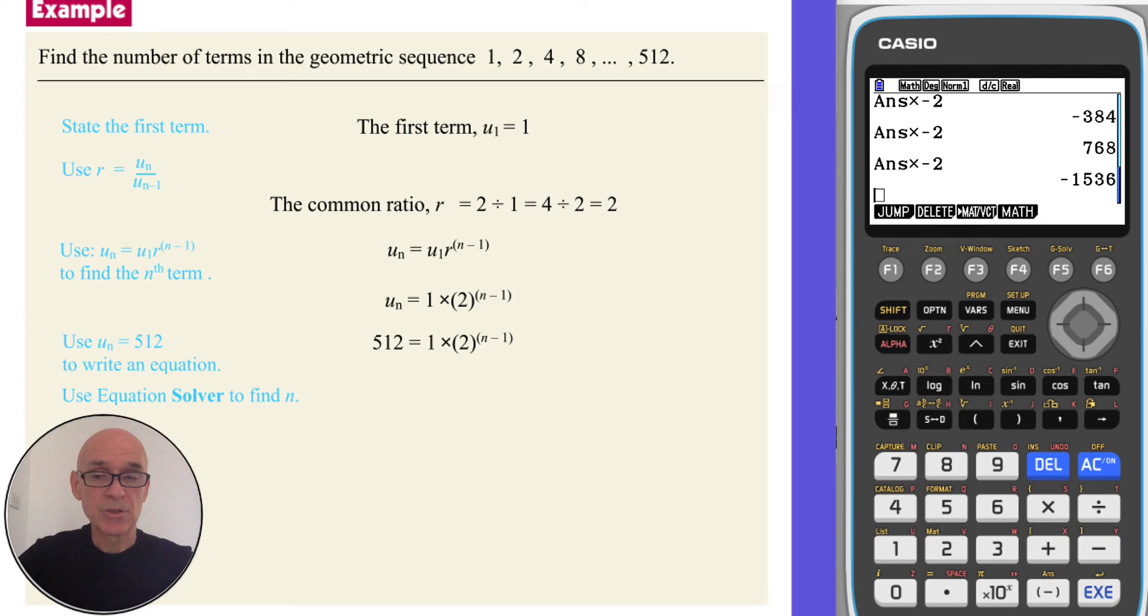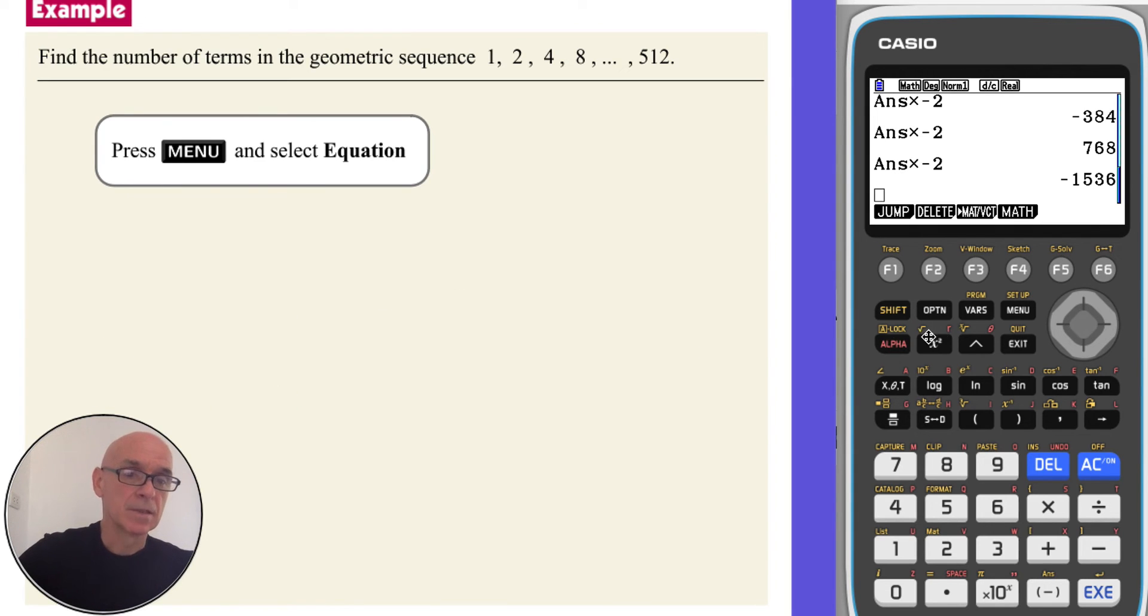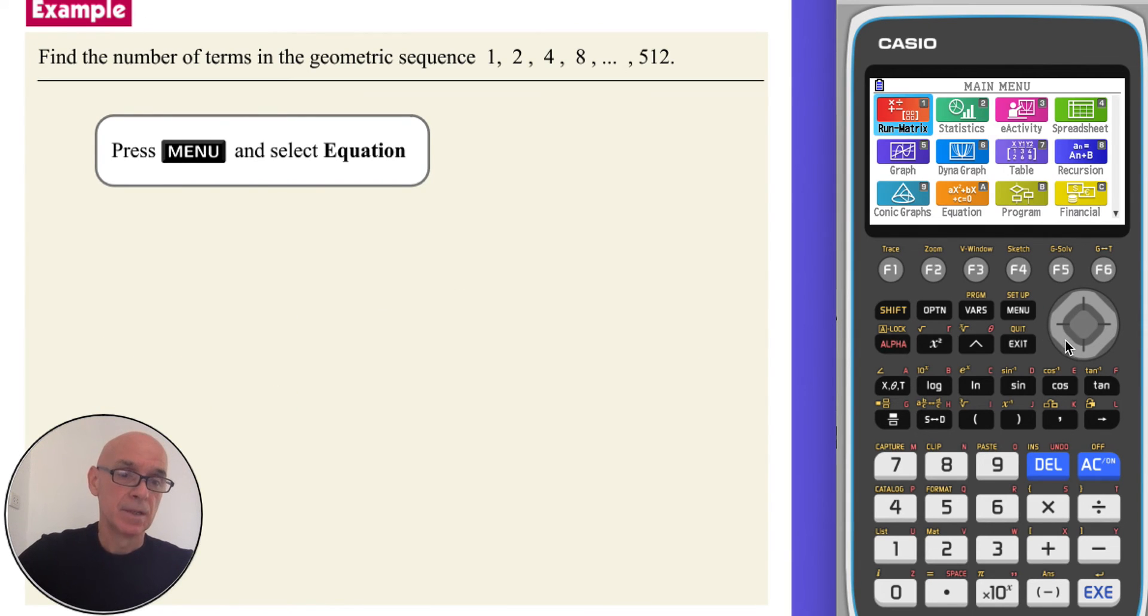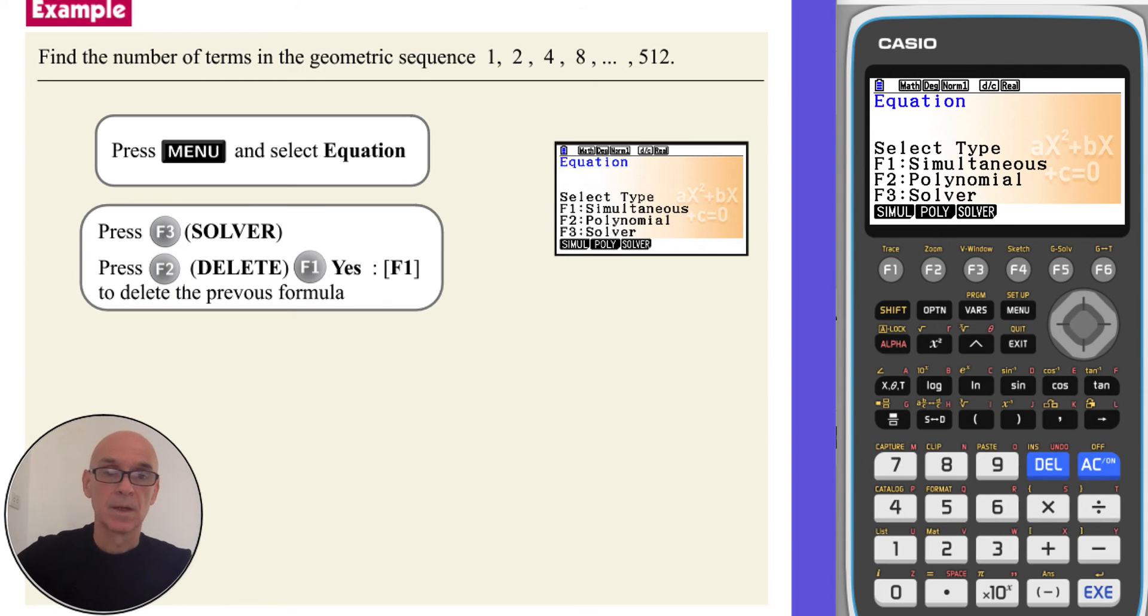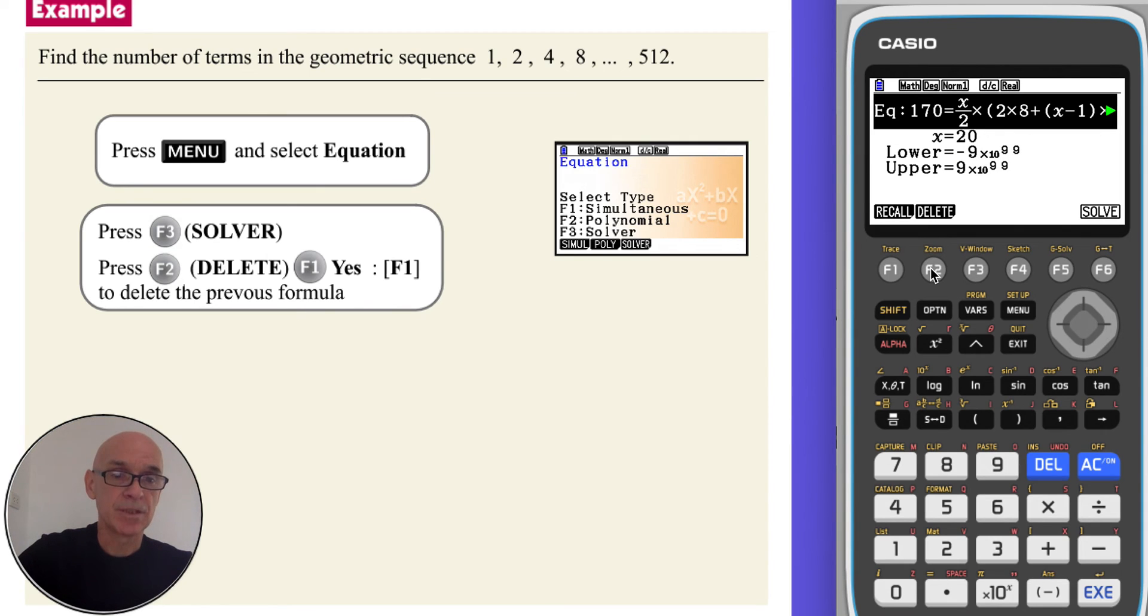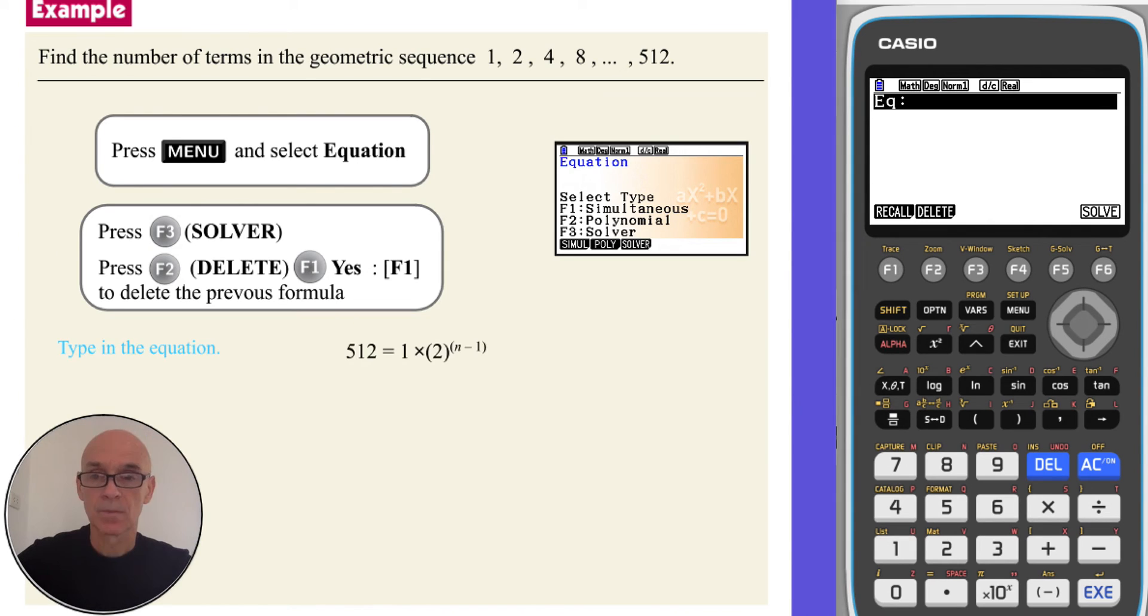We will use equation solver on the calculator to find n, the solution of the equation. To do that, from the main menu, if we select equation, then press F3 the solver, and F2 to delete any previous equation, and F1 to confirm the deletion, and then we type in the equation that we need to solve.